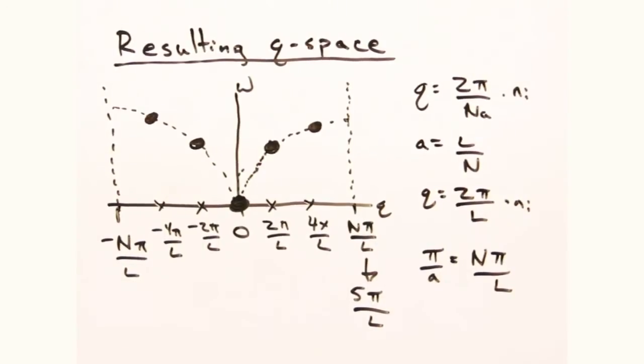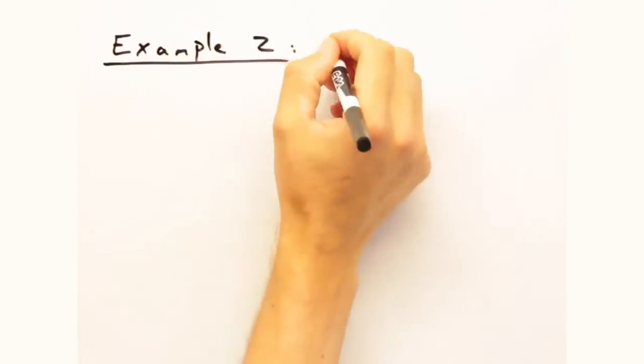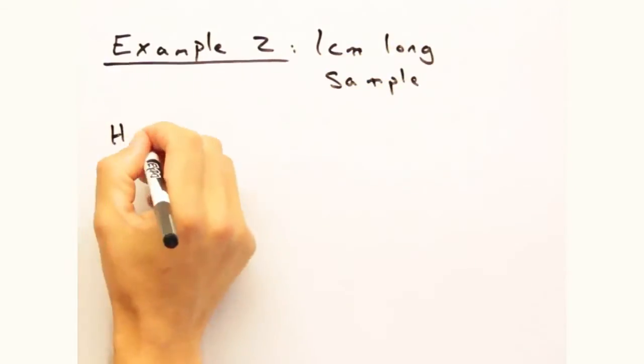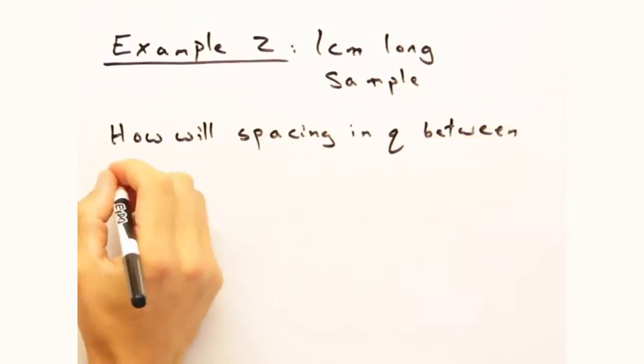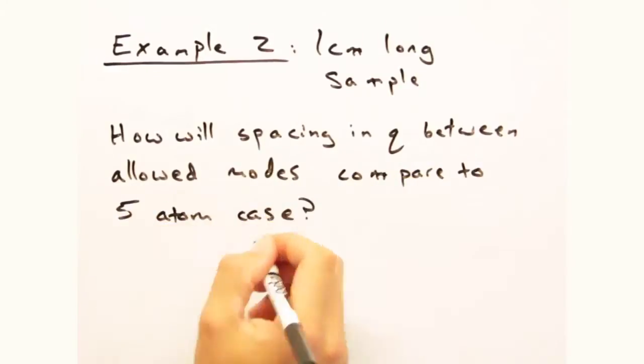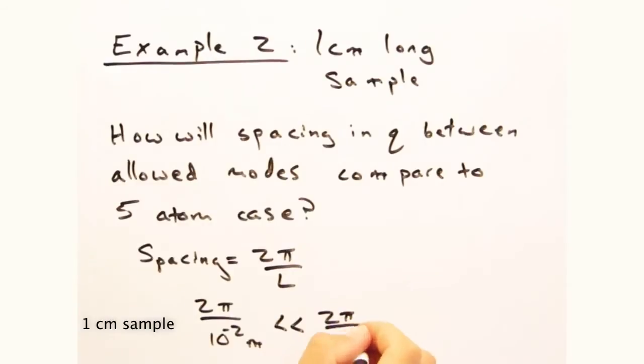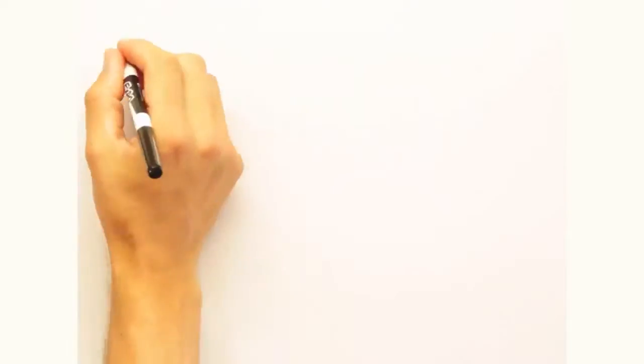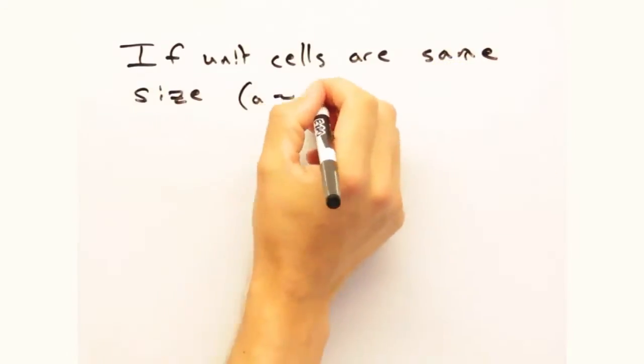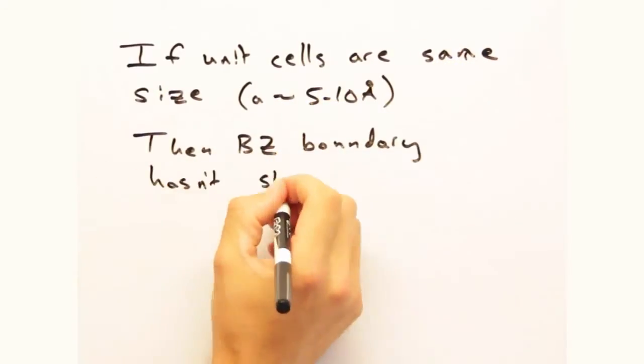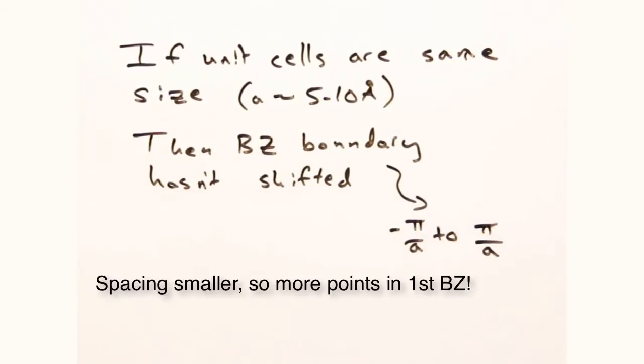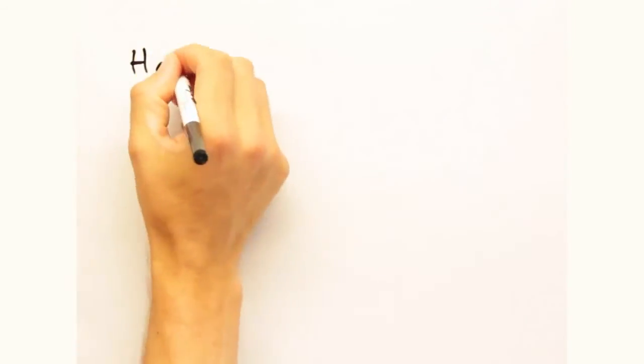Okay, so 5 atoms is probably a bit short. Let's consider a 1D sample that's 1 cm long. How would the spacing in Q between allowed modes compare to the 5 atom case? It would shrink considerably because of the inverse relationship with L. Exactly. And assuming our unit cell is the same size, our Brillouin zone also stays the same size. So because of the smaller spacing between modes, we have considerably more modes in the cm long sample.